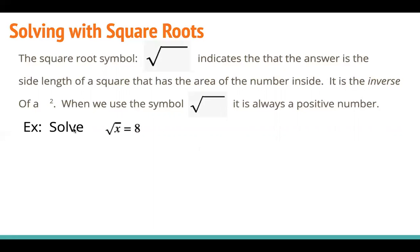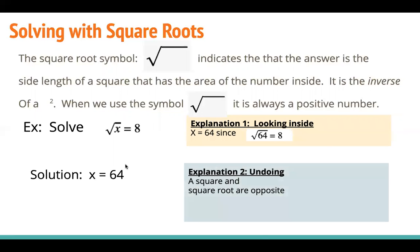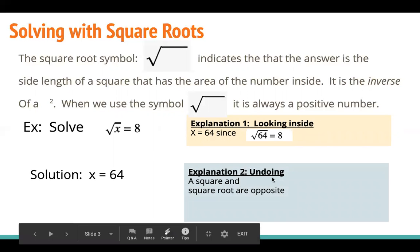Let's look at an example, the most basic here. If I say solve and it says the square root of x equals 8, the solution is 64. There are two explanations. Explanation 1: the square root of 64 is 8. But I could also think about this as undoing. To undo a square, square and square root are inverses. They cancel. So if I square both sides of this equation, I would get on the left that x, the square and square root cancel, and I get x equals 64.